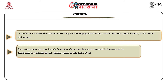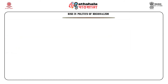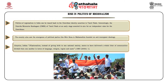Statehood demands for Vidarbha from Maharashtra, Bundelkhand from Uttar Pradesh and Madhya Pradesh have been continuing for quite long. A number of statehood movements moved away from language-based identity assertion and made regional inequality the basis of demand — the most notable example being the creation of the new state of Telangana by bifurcating Andhra Pradesh in 2014, although the demand can be traced back to the late 1960s. The politics of regionalism in India can be traced back to the Dravidian identity assertion in Tamil Nadu — the DMK at an early stage asserted its aim for an independent state for the Dravidians, although they dropped this idea afterwards. They vehemently opposed a move of the central government to introduce Hindi as the official language in 1965, and it was mainly their opposition which prompted the central government to continue with both Hindi and English as official languages.